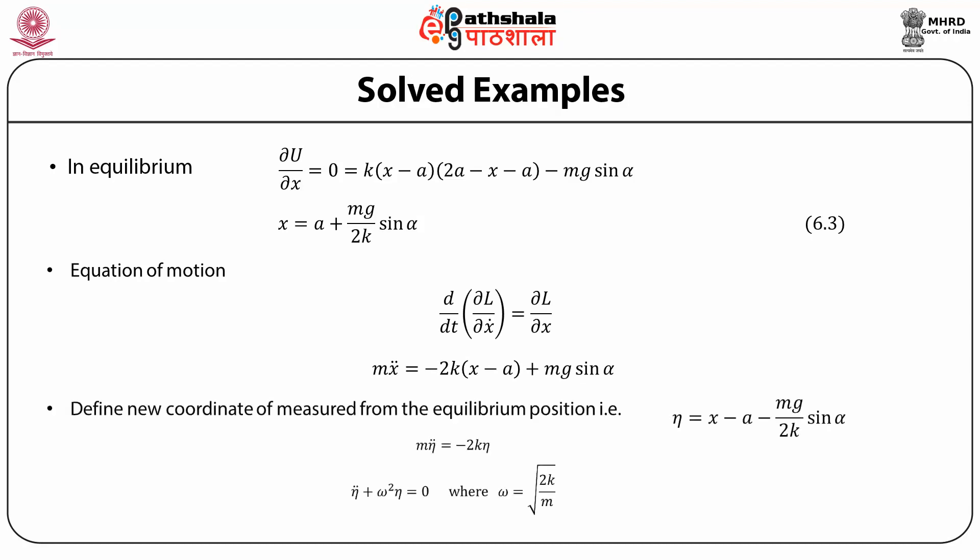Now we define a new coordinate measured from the equilibrium position. We define eta = x − a − mg/(2k) sin(alpha), which means that in equilibrium, eta = 0. In terms of this new variable eta, the equation of motion becomes m eta-double-dot = −2k eta, which you can recognize as the equation of a harmonic oscillator with restoring force of magnitude 2k. The solution is then sinusoidal with frequency omega = sqrt(2k/m).